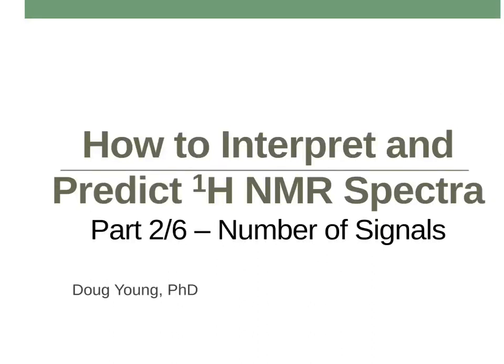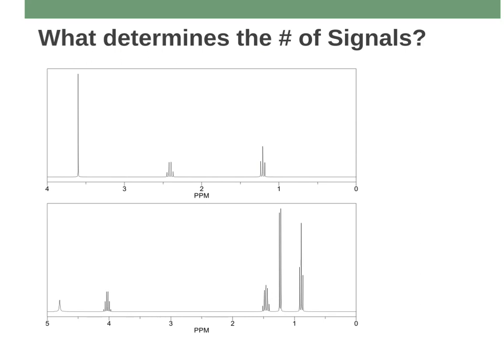Hello folks, this is Dr. Young, and in this video we're going to take a closer look at the NMR spectrum itself. We're going to look at the number of signals, which is the easiest thing to analyze, and talk about what that means with regards to our actual organic structure. The number of signals is literally just looking at how many groupings of these lines there are in each NMR spectrum.